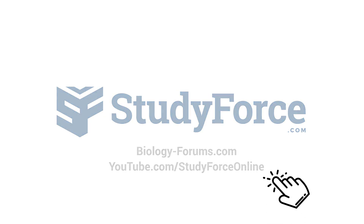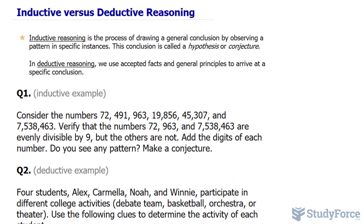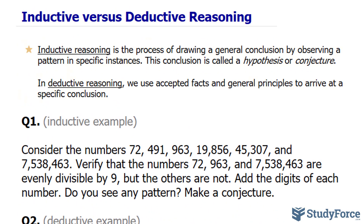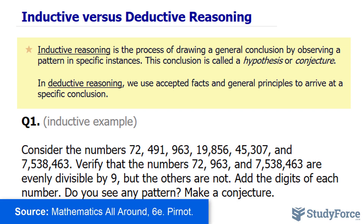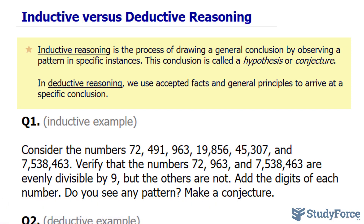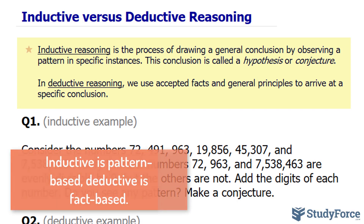In this lesson, we'll discuss two very important ideas in mathematics known as inductive and deductive reasoning. Let's begin with their definitions. Inductive reasoning is the process of drawing a general conclusion by observing a pattern in specific instances. This conclusion is called a hypothesis or conjecture. In deductive reasoning, we use accepted facts and general principles to arrive at a specific conclusion.